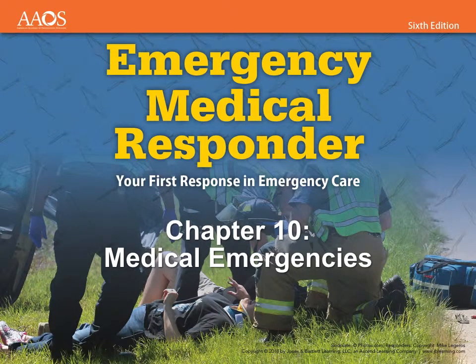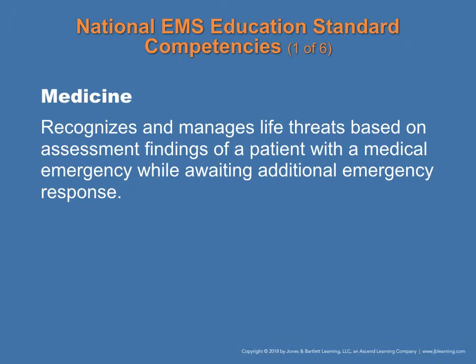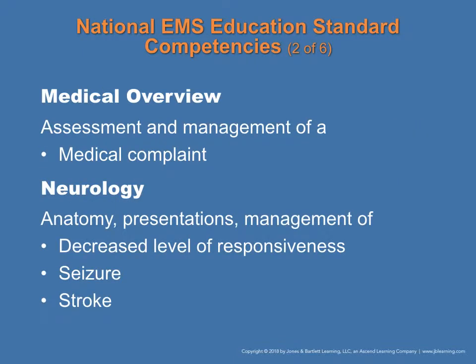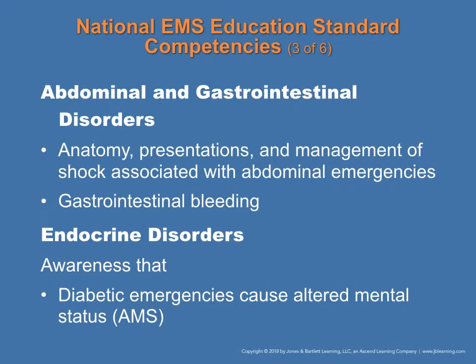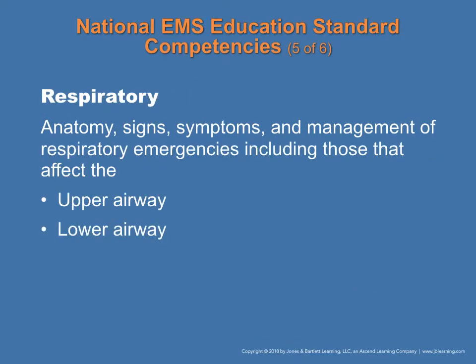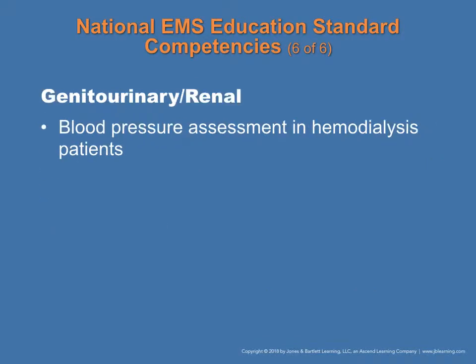Hello Cadets, this is Major Thevenin. We're going to be discussing Chapter 10, Medical Emergencies. In this chapter, we're going to learn different life-threatening emergencies in the body system, from neurology to abdominal or GI, endocrine disorders, cardiovascular, respiratory system, and genitourinary or renal — the short term is GU system.